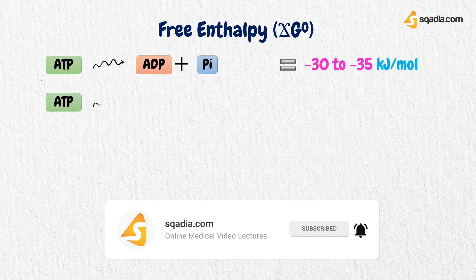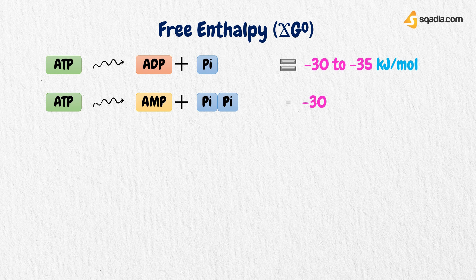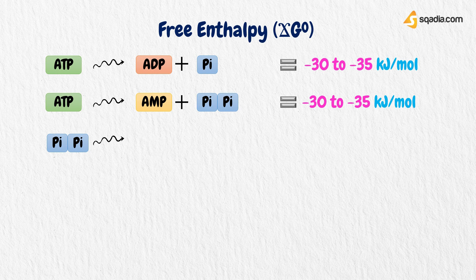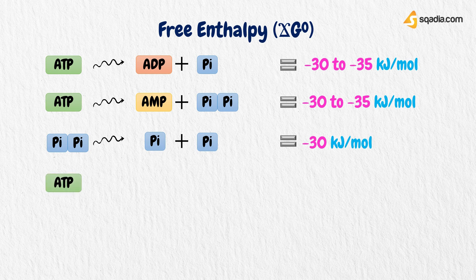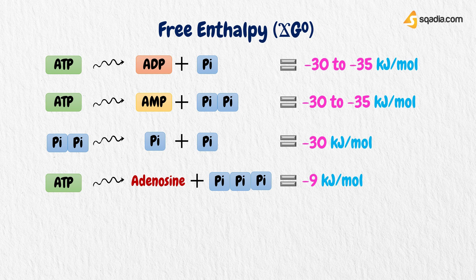The anhydride bond of ATP that is cleaved only has a minor influence on it. Even the hydrolysis of diphosphate, also known as pyrophosphate, still yields more than minus 30 kilojoules per mole. By contrast, cleavage of the ester bond between ribose and phosphate only provides minus 9 kilojoules per mole.